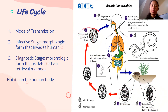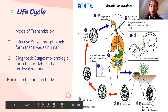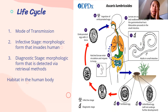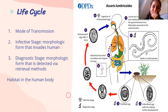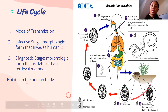Once a person accidentally eats an embryonated egg — say, on contaminated lettuce — the hatched larvae enter circulation and migrate to the lungs. Sometimes there is coughing; the larvae are coughed up and swallowed, re-entering the gastrointestinal tract. Maturation proceeds in the small intestine and the cycle continues. This is actually a relatively simple life cycle.